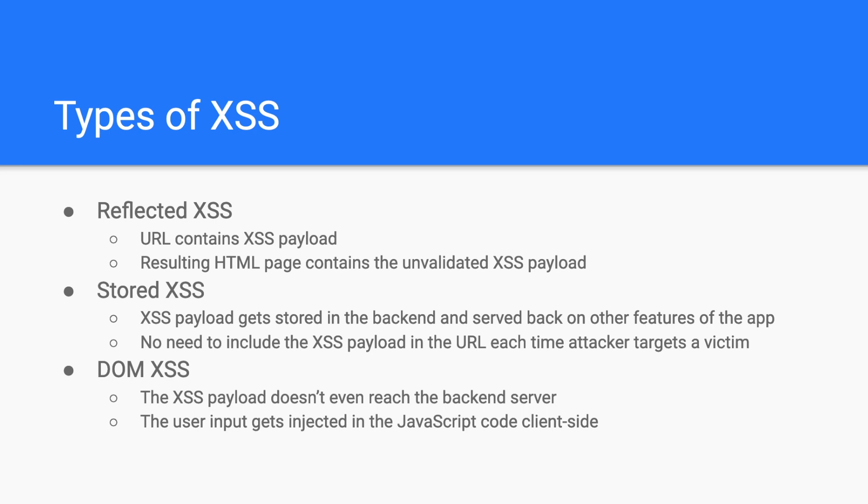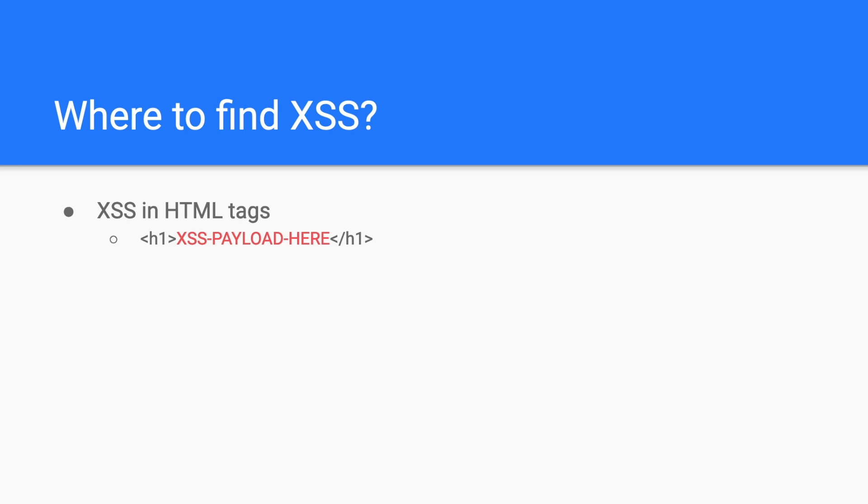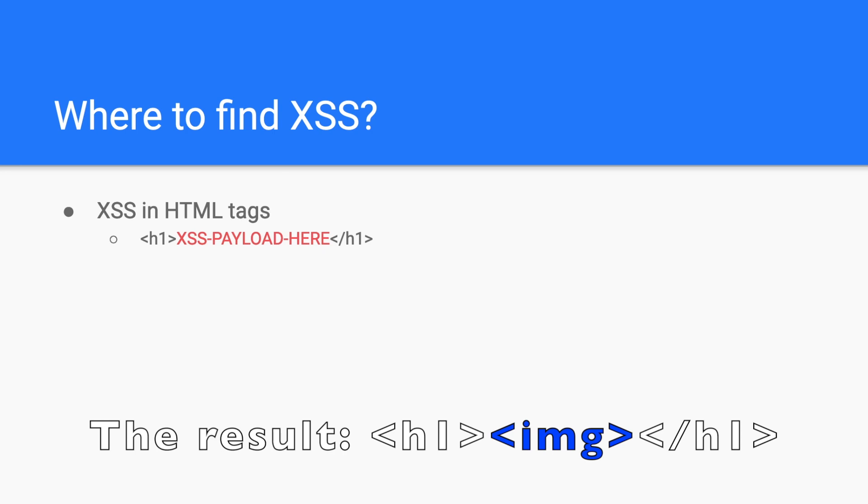Now that you understand what cross-site scripting is and what are the types of that vulnerability, let's understand where it can be injected. You can find cross-site scripting in many injection contexts depending on where your input gets inserted. First, you have the most obvious one: cross-site scripting in HTML tags. When you notice your user input inside an HTML tag, you have to test if you can inject arbitrary tags. Suppose your malicious user input gets inserted inside an h1 tag — you can replace your payload with an image tag, and if you see a broken image in the result, this is a strong indication that you can achieve cross-site scripting.